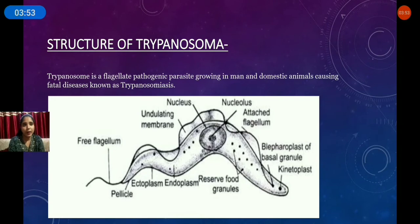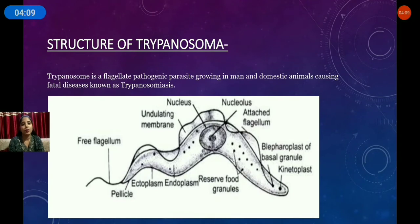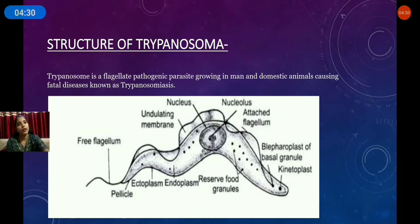The cytoplasm is differentiated into two parts: ectocytoplasm and endocytoplasm. The ectocytoplasm — the outer cytoplasm — is dense, and the inner endocytoplasm is in liquid form. It contains a number of cell organelles like mitochondria, golgi body, ribosomes, and centrosomes. This is the general body structure of trypanosoma.